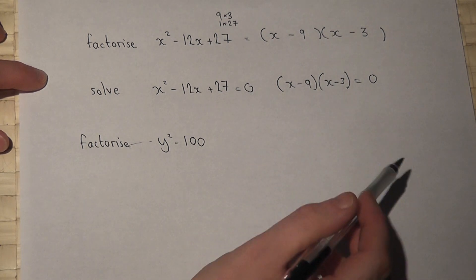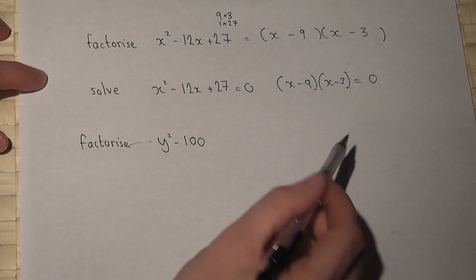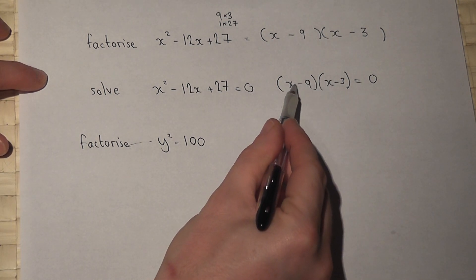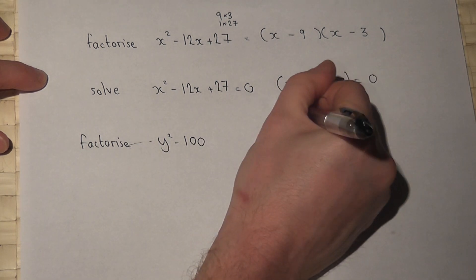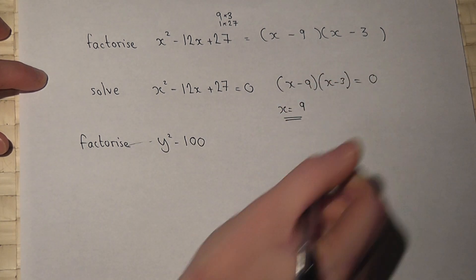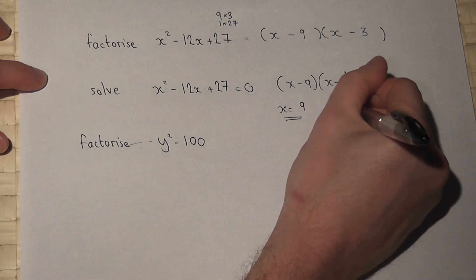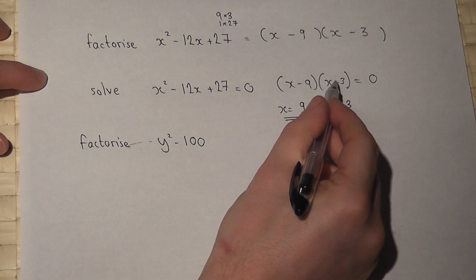If x = 9, then 9 - 9 = 0, so x = 9 is one solution. Also, if x = 3, then 3 - 3 = 0.